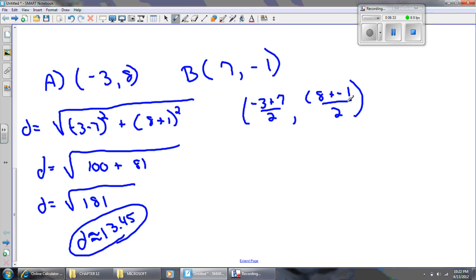And this, I have a mistake here. There we go. So, negative 3 plus 7 is 4. 4 divided by 2 is 2. And 8 plus negative 1 is 7. 7 divided by 2 is 3½.